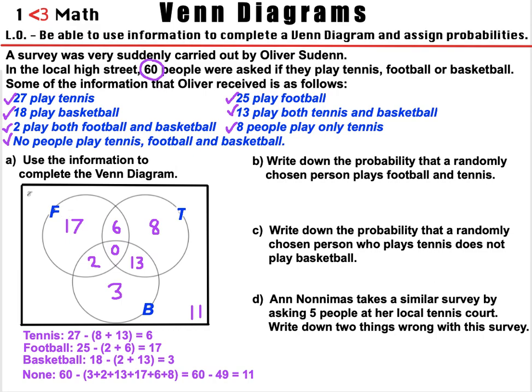Moving on to Part B: we are writing down the probability that a randomly chosen person plays both football and tennis. There were 60 people total. There are 6 people who play both football and tennis, so that's 6 out of 60. Simplifying by dividing numerator and denominator by 6 gives 1 over 10. This can also be written as 0.1 or 10%, though personally I prefer writing probabilities as fractions where possible.